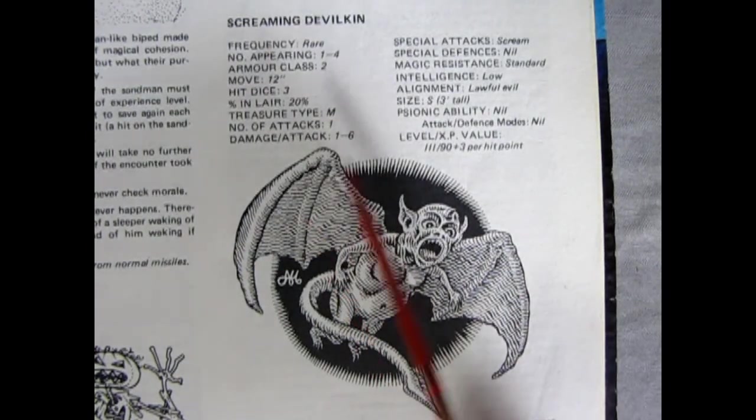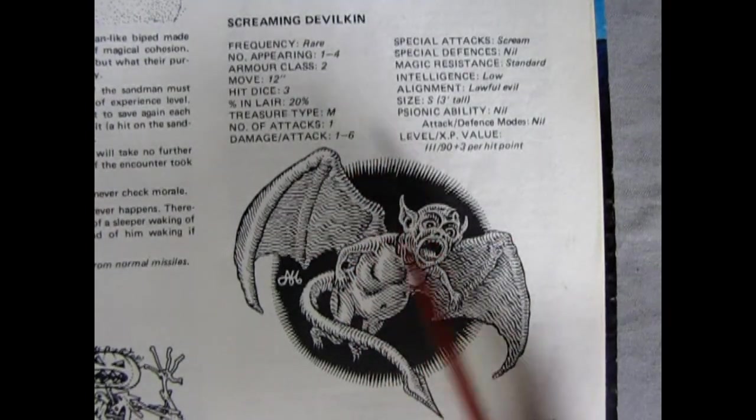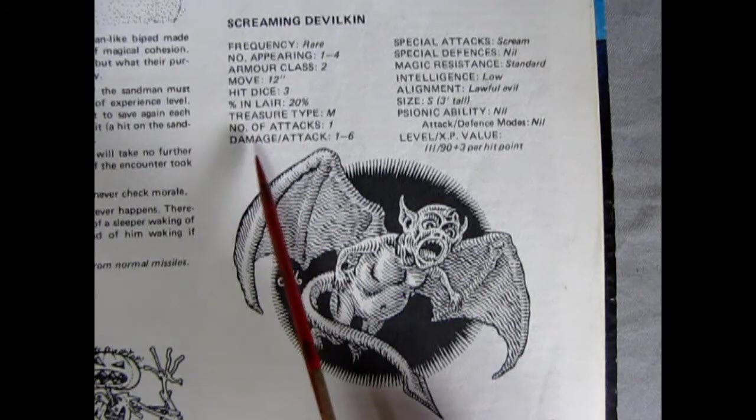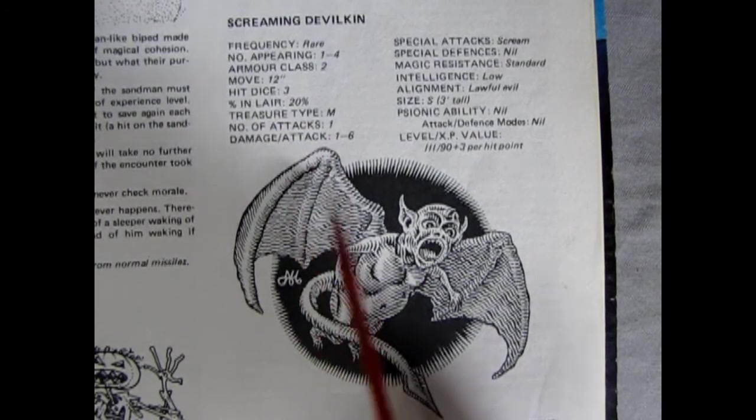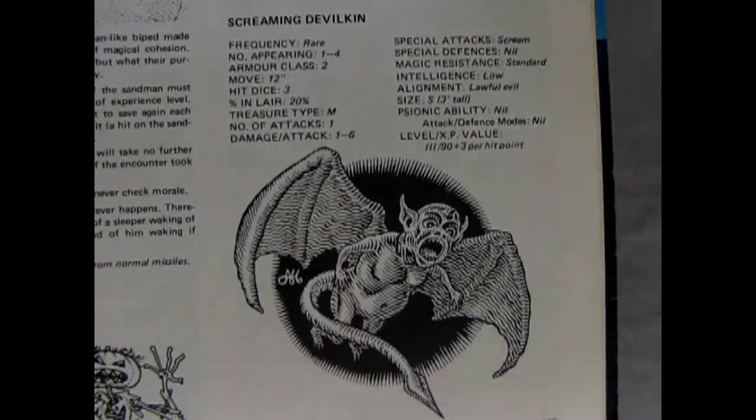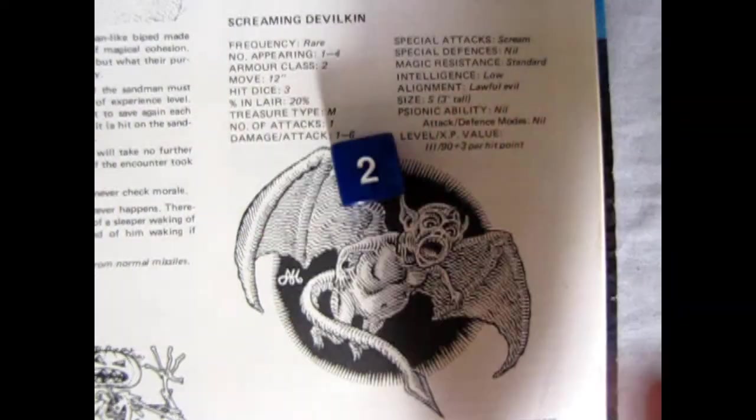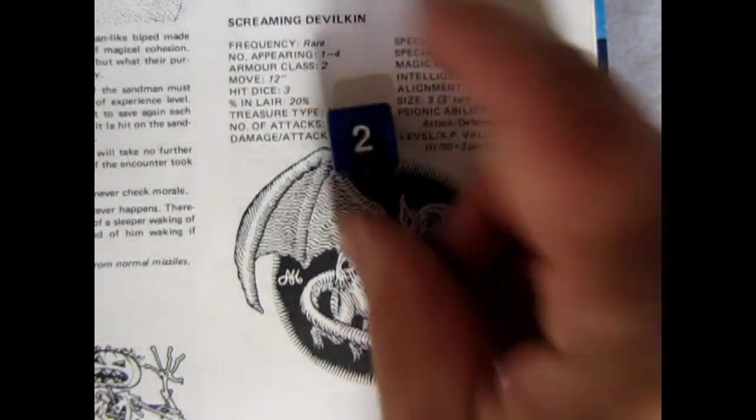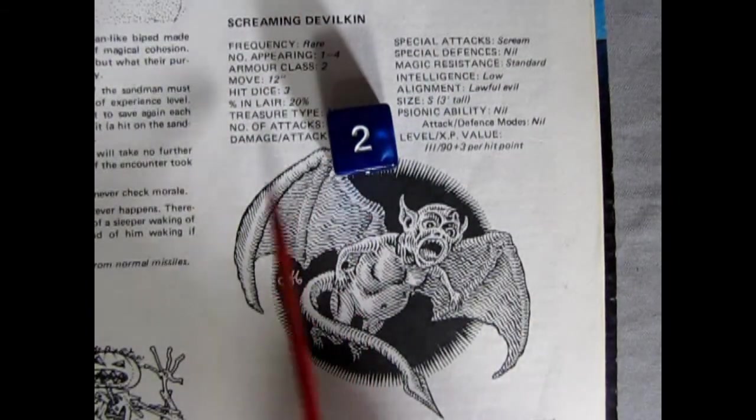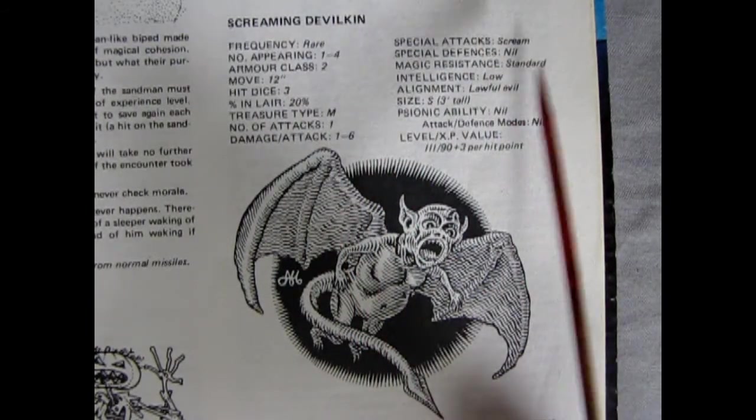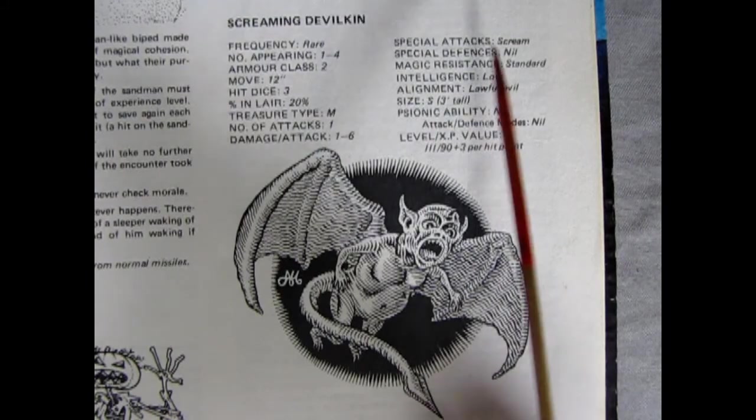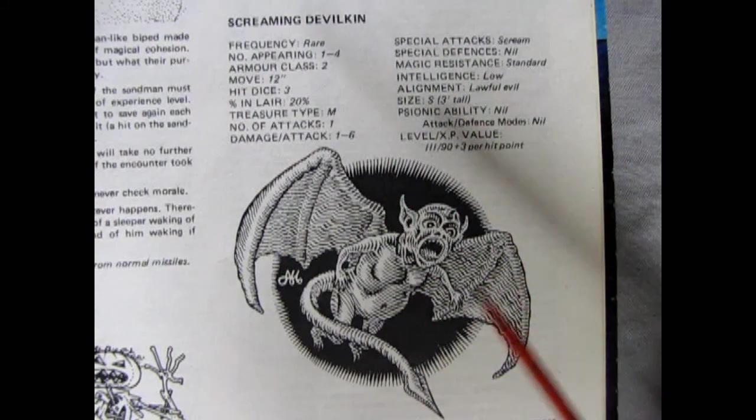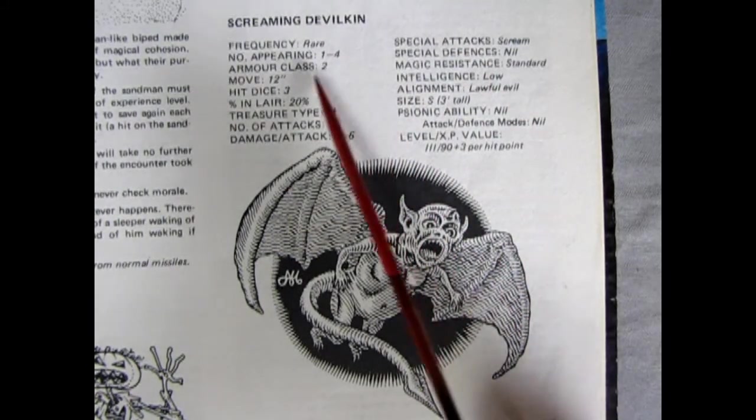Number of attacks is one, so in each combat he only gets one, but his damage is 1-6, which is a six sided dice. So this little guy, each time he hits you does two damage. So then we get into special attacks and magic resistance, all the rest of this stuff, but we won't really cover that until we look in the monster manual. But that is basically how these are going.